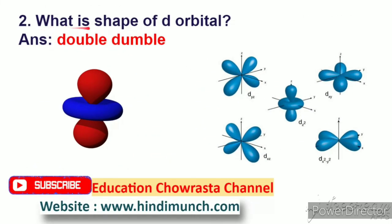Next question: what is the shape of d-orbital? d-orbital yokkha shape inti? Answer: double dumbbell. Also, s-orbital has a spherical shape, and p-orbital has a dumbbell shape.